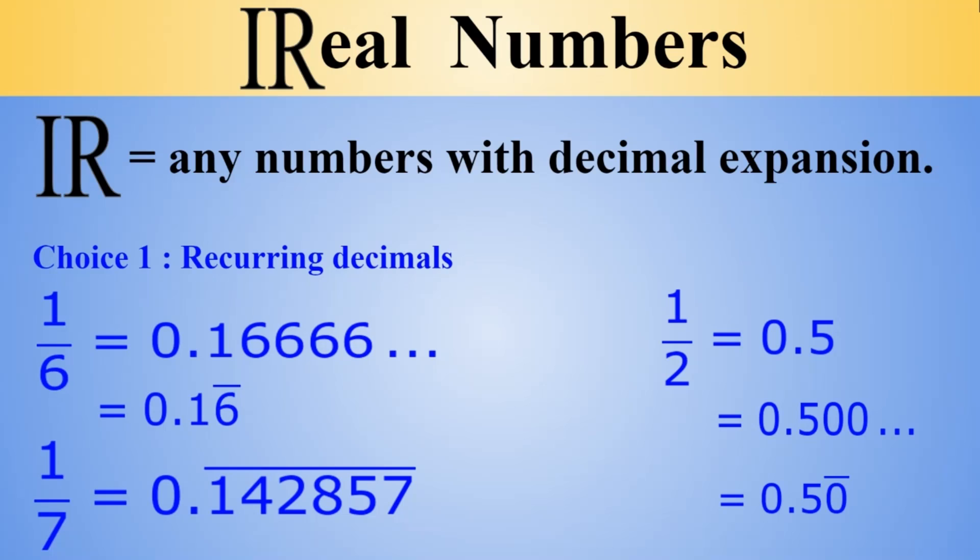And one more important thing is that it doesn't have to have just one number repeating. As we have seen in the 1 by 7 case, we have so many numbers repeating. Certainly, you can also have 0.121212 or 0.343434 or 0.232323 in this way. You can have whatever, how big you want it to be. That doesn't matter as long as you have some repeating part.